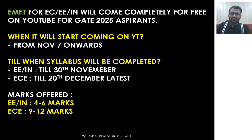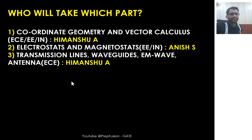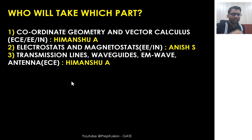Let me tell you who will cover which part. The first part, which is common for all branches — coordinate geometry and vector calculus — will be taken by me. Electrostatics, Magnetostatics, and time-varying fields will be taken by Anistar. Then EM wave, Maxwell equations, transmission line, waveguide, and antenna — that is available only for EC students — will also be taken by me.